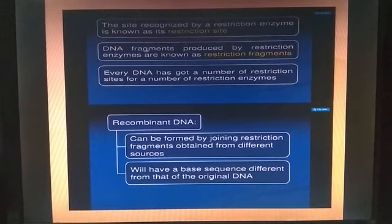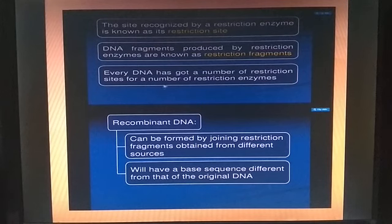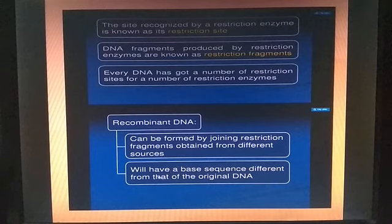The site recognized by a restriction enzyme is known as a restriction site. DNA fragments produced by a restriction enzyme are known as restriction fragments. Every DNA has a number of restriction sites for a number of restriction enzymes. Recombinant DNA can be formed by joining restriction fragments obtained from a DNA source, which will have a base sequence different from that of the original DNA.